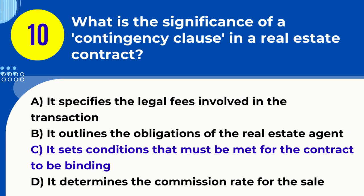Explanation. A contingency clause in a real estate contract specifies conditions that must be fulfilled for the contract to be legally binding. Common examples include home inspections, financing, and the sale of a current home.